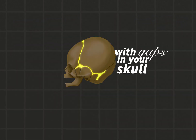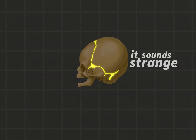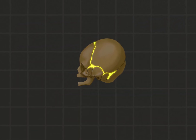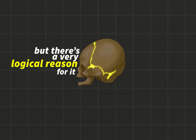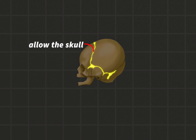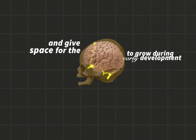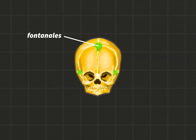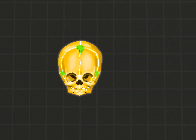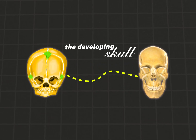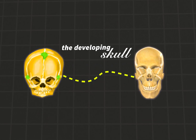You are born with gaps in your skull. It sounds strange, but there's a very logical reason for it. These gaps allow the skull to stay flexible during birth, and give space for the brain to grow during early development. We call them fontanelles, and this is what we call the developing skull.